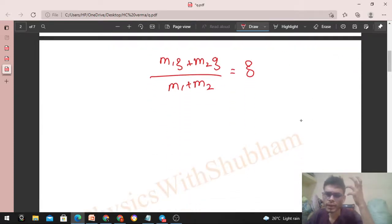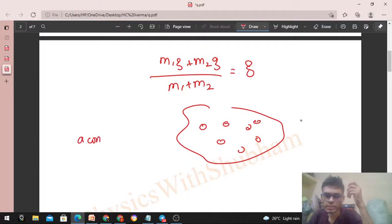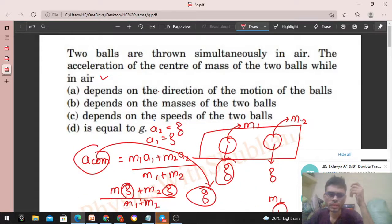So you can generalize. Suppose here there are n number of particles in any system and they're in free fall, means all the particles are in the air, then acceleration of center of mass will always be equal to g.